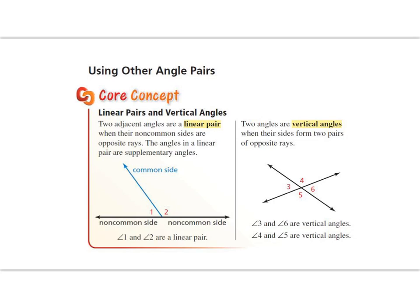Another core concept: linear pairs and vertical angles. A linear pair is when two adjacent angles have non-common sides that are opposite rays, making the angles supplementary and adding up to 180 degrees. Vertical angles are formed when two lines intersect, creating two pairs of opposite rays. The vertical angles are across from each other — angles 4 and 5 are vertical angles, and angles 3 and 6 are vertical angles.